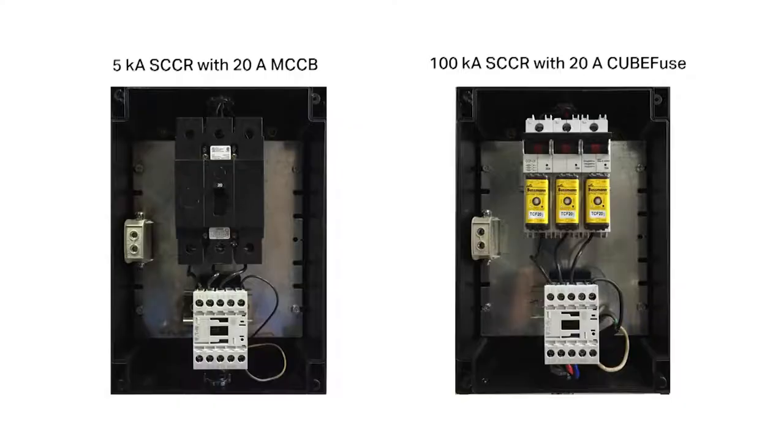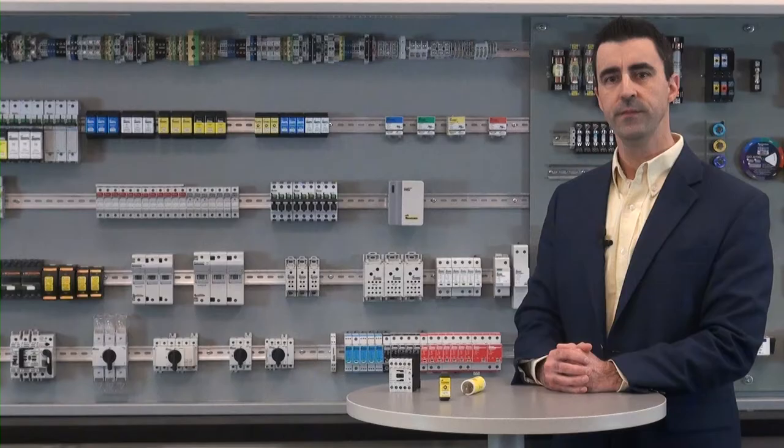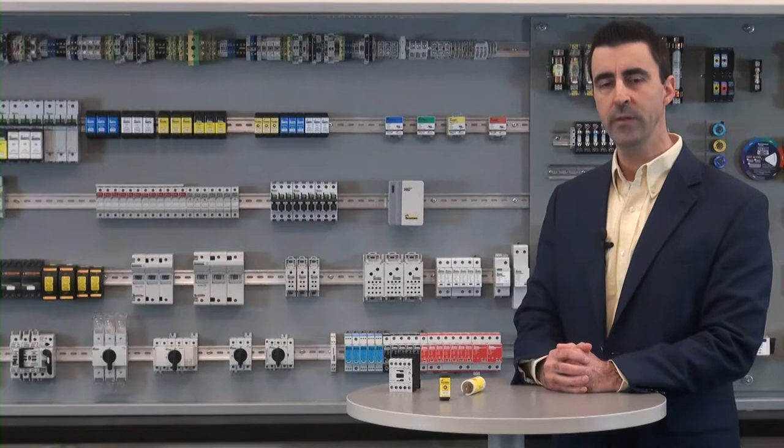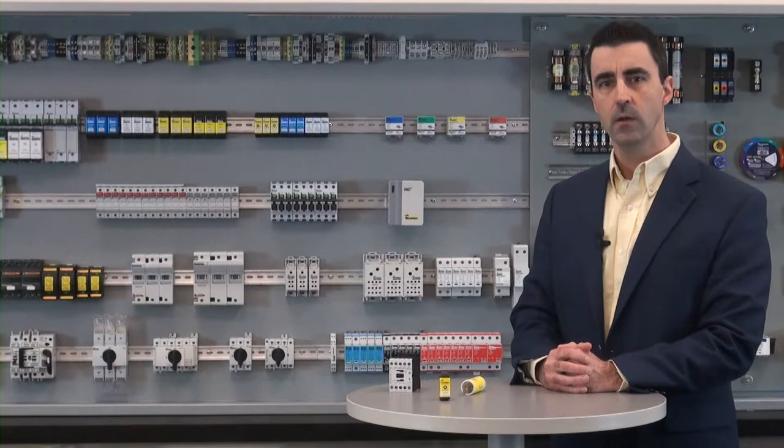Here we have an enclosure with a contactor rated 5,000 amps protected by a non-current limiting overcurrent protective device. This enclosure can only be applied in a system that can deliver no more than 5,000 amps of fault current. But what happens if it sees 65,000 amps?